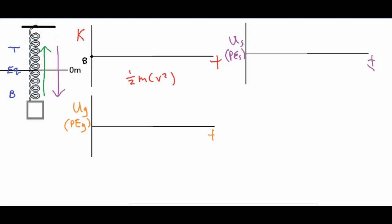Starting from the bottom position it's being pulled up so it's going to be accelerating towards the top. At the equilibrium position is where it's going to be going the absolute fastest because it's going to be going faster and faster moving upwards. Then when it starts to compress the spring, the spring is going to push against it and make it slow down more and more until it eventually reaches a velocity of zero again at the top.